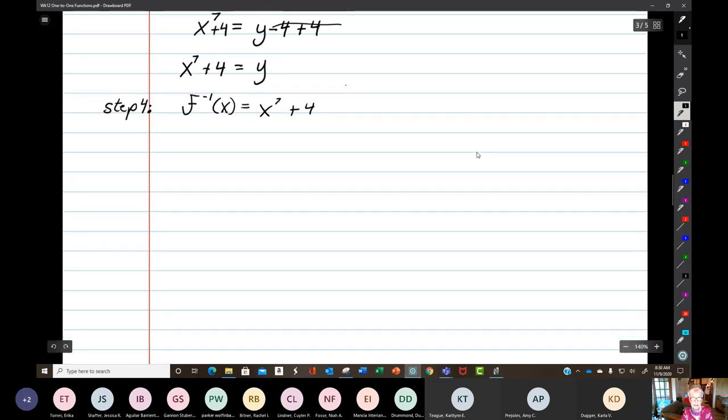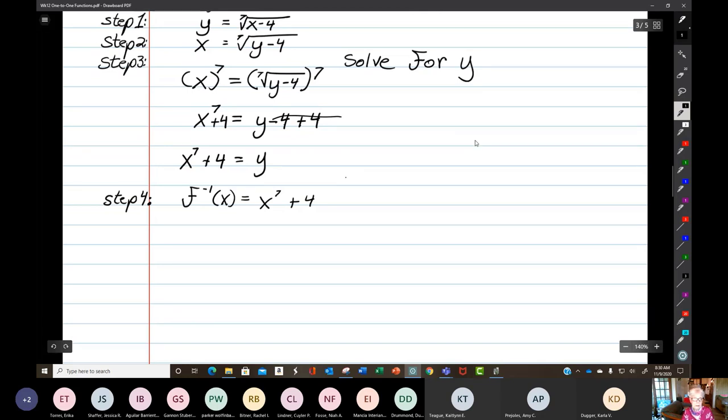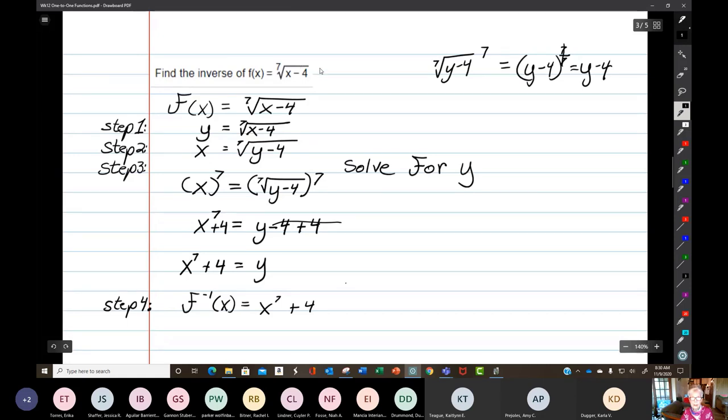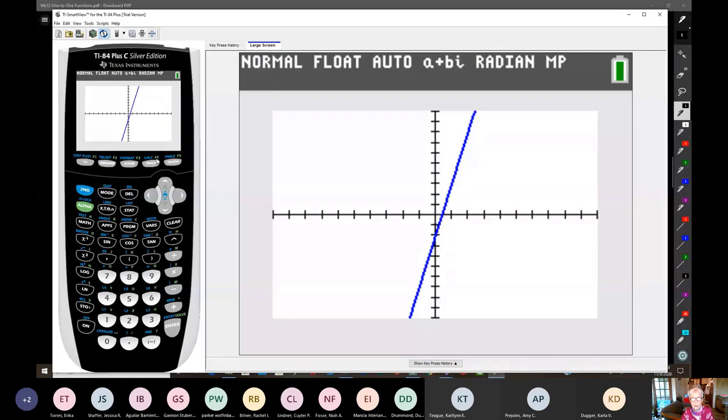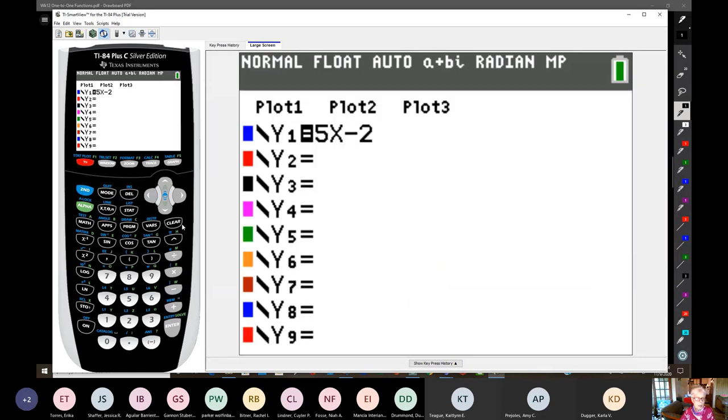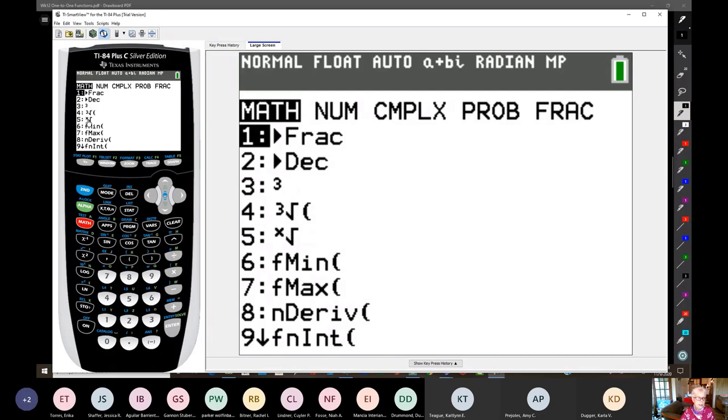Now your last step. f inverse of x equals x to the seventh power plus four. And those are the steps, all the steps, that you use every time you find the inverse of a function. Incidentally, I should have graphed that. I already know it's one to one. So I was trying to save time. But let's do it just so you'll know what the seventh root looks like.